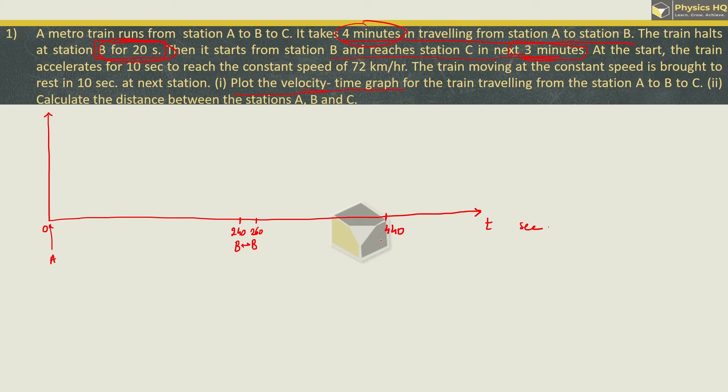Now at the start, the train accelerates for 10 seconds to reach the constant speed of 72 km per hour. The speed is given here as 72 km per hour. We have to convert this to meter per second, so we multiply it by 5 by 18. This will be 20 meter per second. So what they are saying is, in 0 to 10 seconds, the train accelerates to this maximum speed of 20 meter per second.